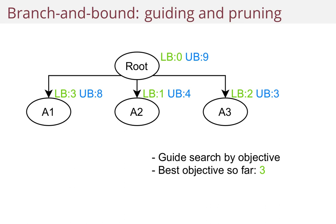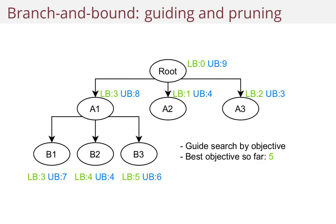You guide the search by the lower bound — that's called best first search. Instead of doing breadth first or depth first, you want to guide it by some heuristic. So we'll expand A1. Expanding A1, you get B1, B2, and B3, with some lower bounds and upper bounds. Now the best objective we've seen so far — the maximum lower bound — is five, seen in B3. So B3 is the next node that we would expand.